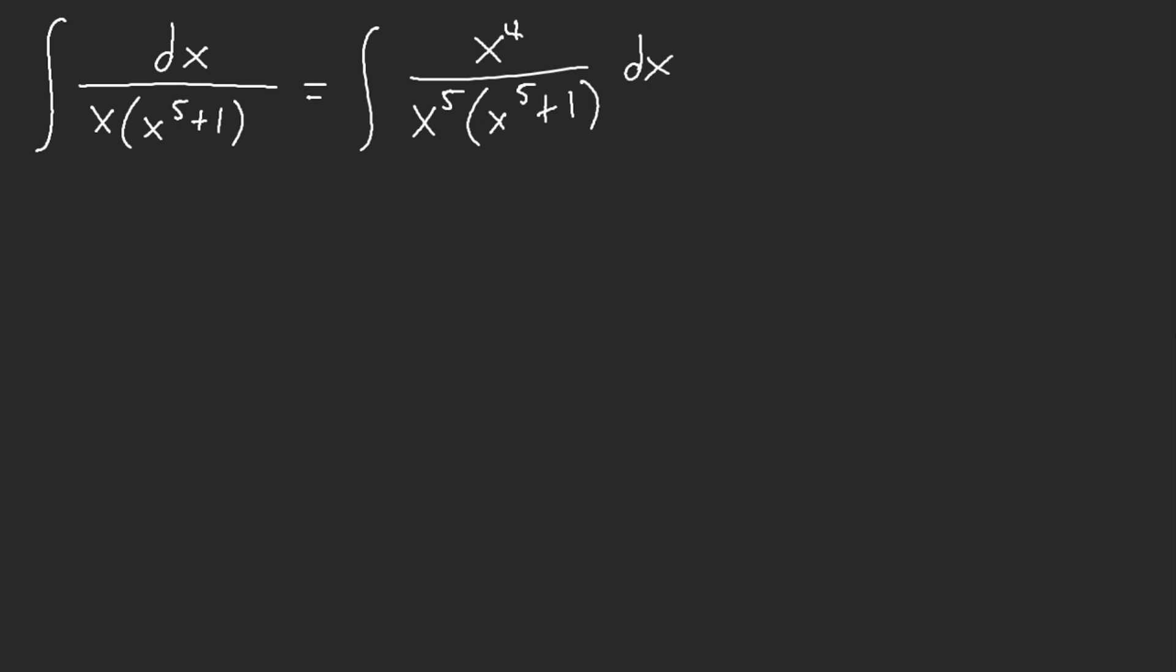Pretty much in general, whenever you have an integral like this, what you can do is multiply top and bottom by x to the power of n minus 1, then you get x^n times x^(n+1).